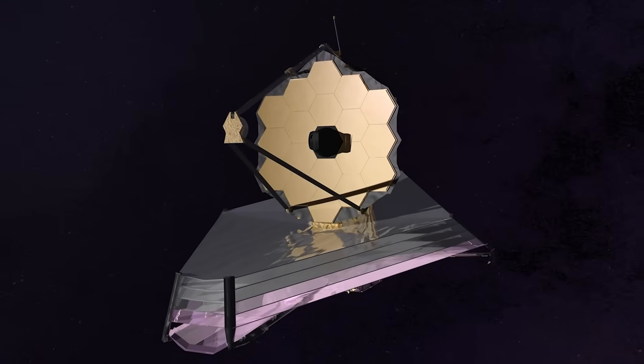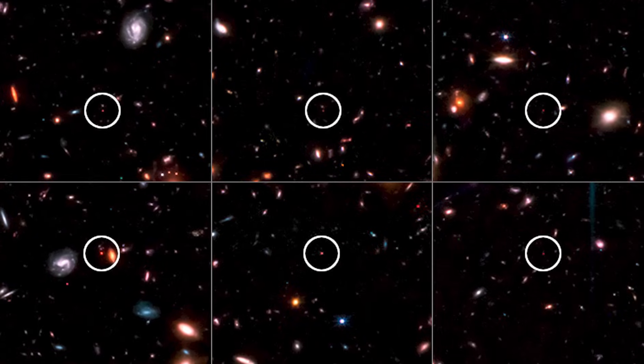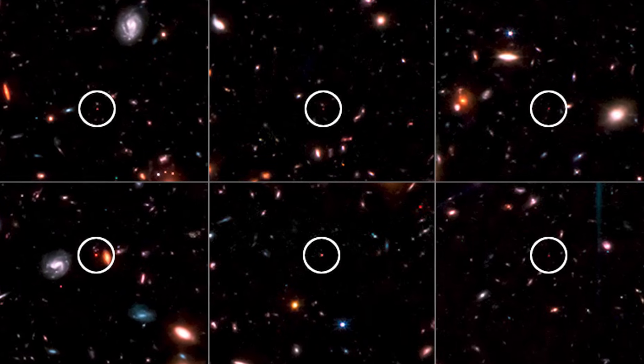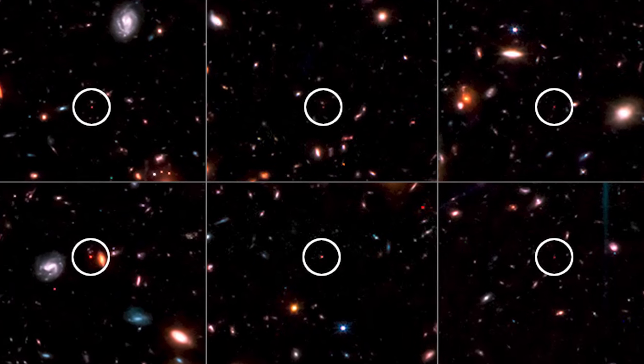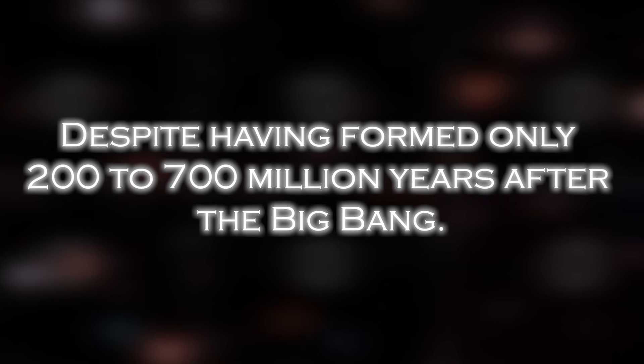The James Webb Space Telescope has revealed the discovery of six massive galaxies dating back to the earliest times of the universe. Each of these galaxies contains more stars than our own Milky Way, despite having formed only 200 to 700 million years after the Big Bang.